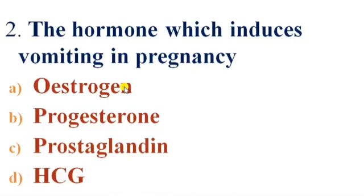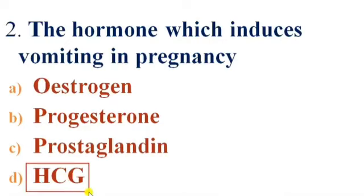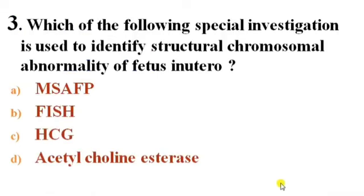Next question: The hormone which induces vomiting in pregnancy. Options: A) Estrogen, B) Progesterone, C) Prostaglandin, D) HCG. Answer is D — HCG, Human Chorionic Gonadotropin. The hormone which induces vomiting in pregnancy is HCG.